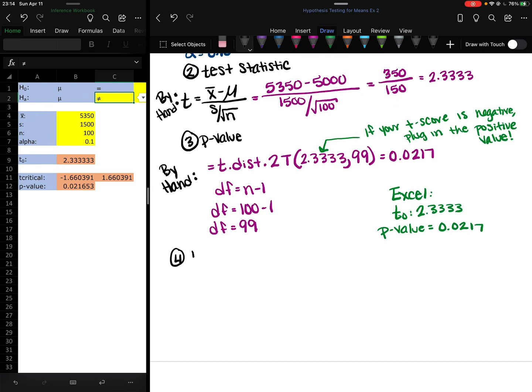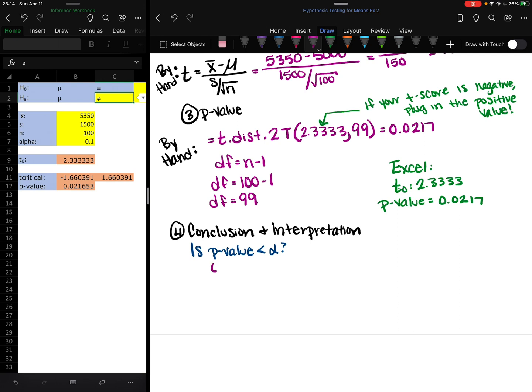So we'll go ahead and do our conclusion and the interpretation. So the conclusion, ask yourself, is the p-value too small compared to the alpha? Is the p-value less than alpha? Are these results unlikely? Are they too unlikely? So is 0.0217 less than 0.10? Yes. So if your p-value is low, that's when you reject H₀. So we are going to reject the null hypothesis.